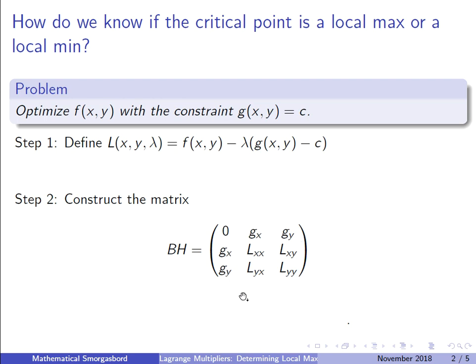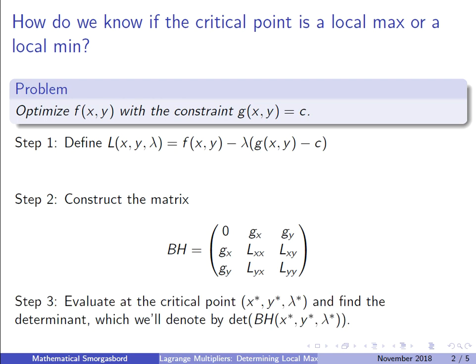Now the second step is—or the third step is—we evaluate this function, this matrix, at the critical point. So this matrix that we get, well these are just partial derivatives, so these are functions. They might be actual constant values, but most of the time they'll be actual functions. So what we do then is we take our critical point and we evaluate it into each of these functions.